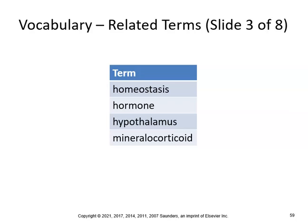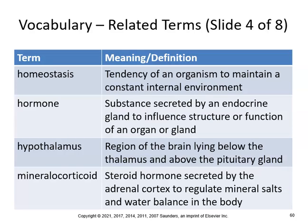Homeostasis is the tendency of an organism to maintain a constant internal environment — that's the sole purpose of the human body. A hormone is a substance secreted by the endocrine gland to influence structure or function of an organ or gland. The hypothalamus is the region of the brain lying below the thalamus and above the pituitary gland. A mineralocorticoid is a steroid hormone secreted by the adrenal cortex to regulate mineral salts and water balance in the body.